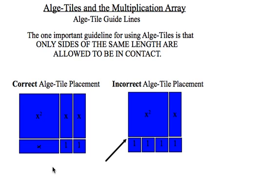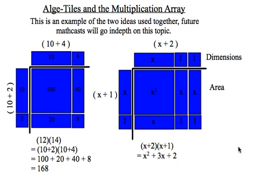Otherwise, our area model won't work so well. So this is a long-term view of where we're going with the area model in combination with the multiplication array. If you can see here on the left, I have a multiplication array example from a previous MathCast. And I'm comparing it to a more difficult algebraic model here. But the only difference is where there was a 10 in the multiplication array on the left, I'm replacing it with an unknown.